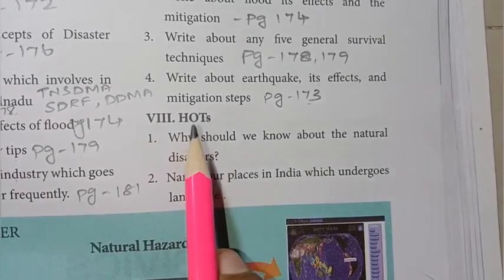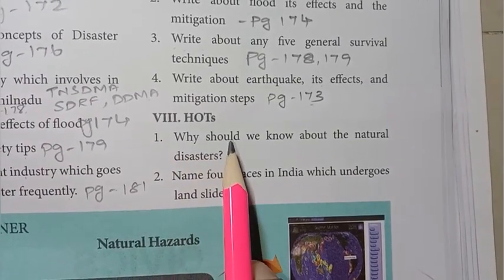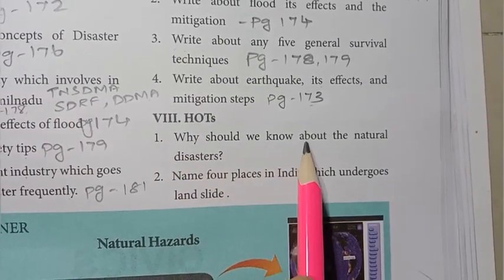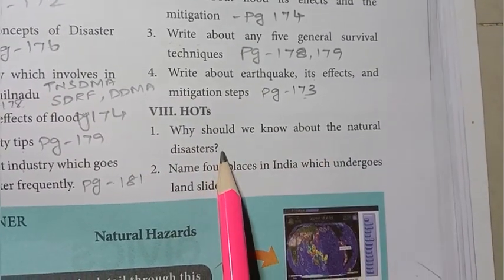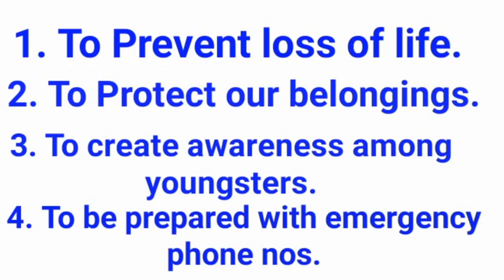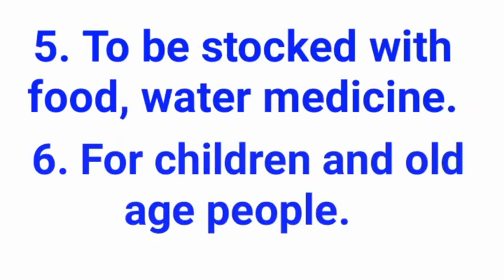Section VIII, HOTS: why should we know about natural disasters? Answer: first, to prevent loss of life; second, to protect our belongings; third, to create awareness among youngsters; fourth, to be prepared with emergency phone numbers; fifth, to be stocked with food, water and medicine; sixth, for the safety of children and elderly people.